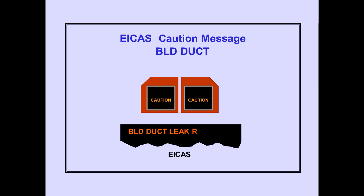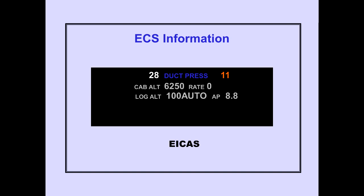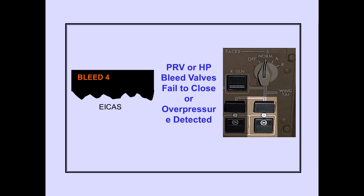ICAS caution message: bleed duct leak. If a duct pressure falls to 11 psi or less, the ECS information appears on primary ICAS with the low duct pressure displayed in amber. The ICAS advisory message 'bleed' is displayed when the PRV or HP bleed valve fails to close when commanded, or when overpressure is detected. The system fault light also illuminates.